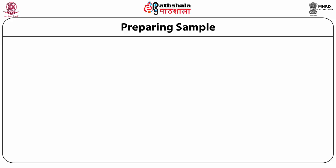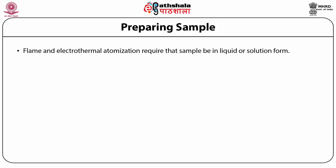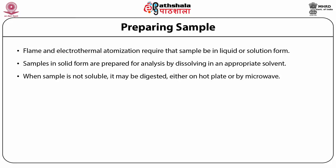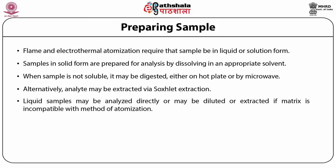An important aspect is the preparation of the sample. Flame and electrothermal atomization require that the sample be in liquid or solution form. Solid samples are prepared by dissolving in an appropriate solvent. When the sample is not soluble, it may be digested on a hot plate or by microwave using nitric acid, sulfuric acid, or perchloric acid. Alternatively, the analyte may be extracted via Soxhlet extraction. Liquid samples may be analyzed directly or diluted or extracted if the matrix is incompatible with the method of atomization. Serum samples, for instance, may be difficult to aspirate when using flame atomization and may produce unacceptably high background absorbance when using electrothermal atomization.